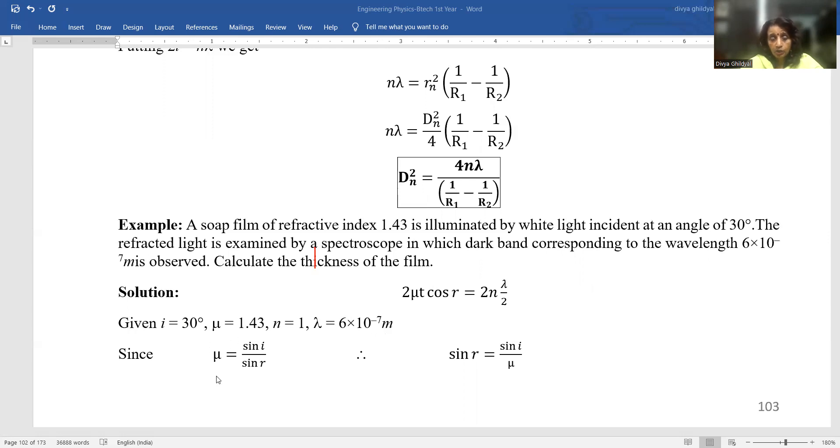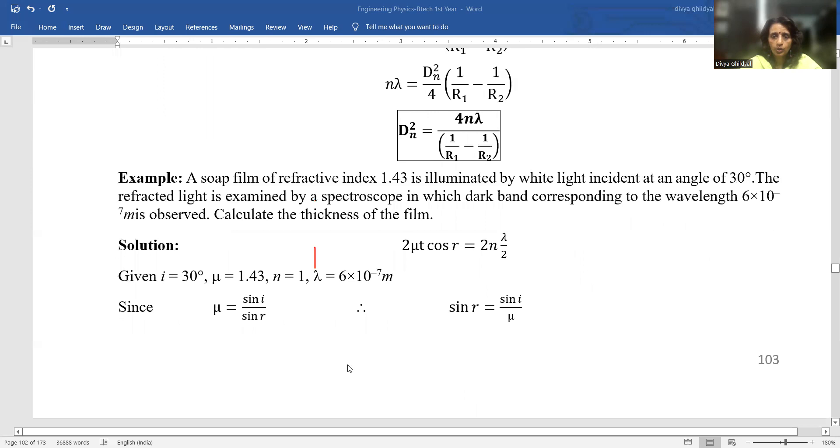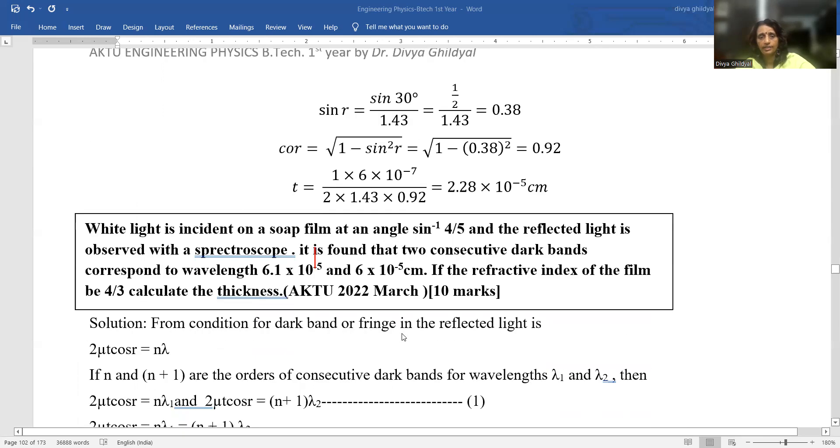From Snell's law, we know that μ = sin I/sin R. So, sin R = sin I/μ. We put this value here, sin 30°/1.43 and we get the value of cos R. We put this value here and we get the answer.